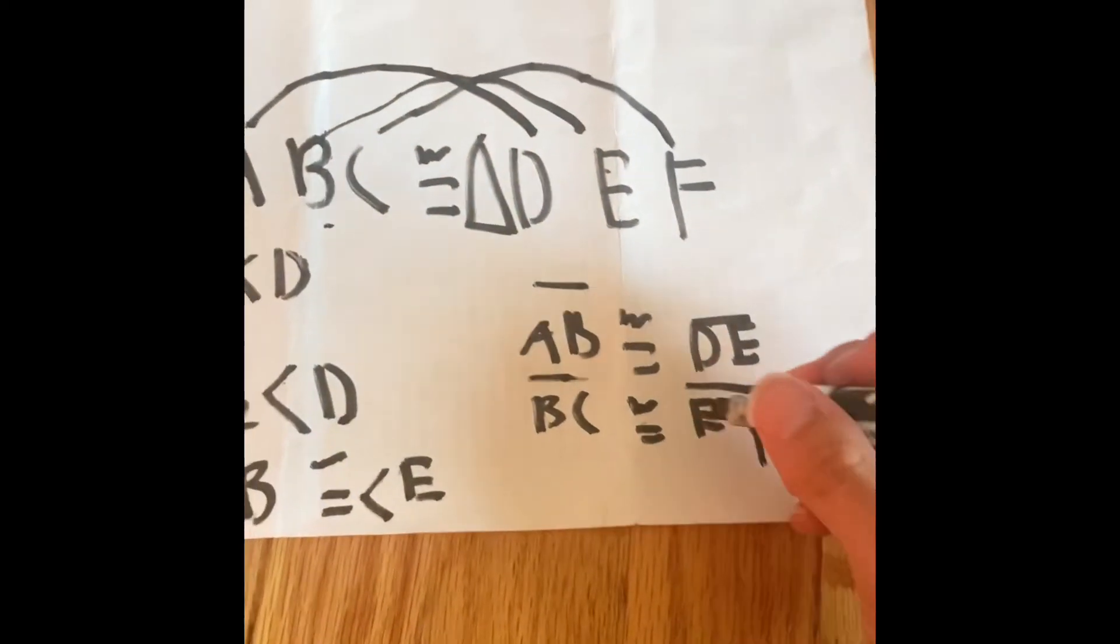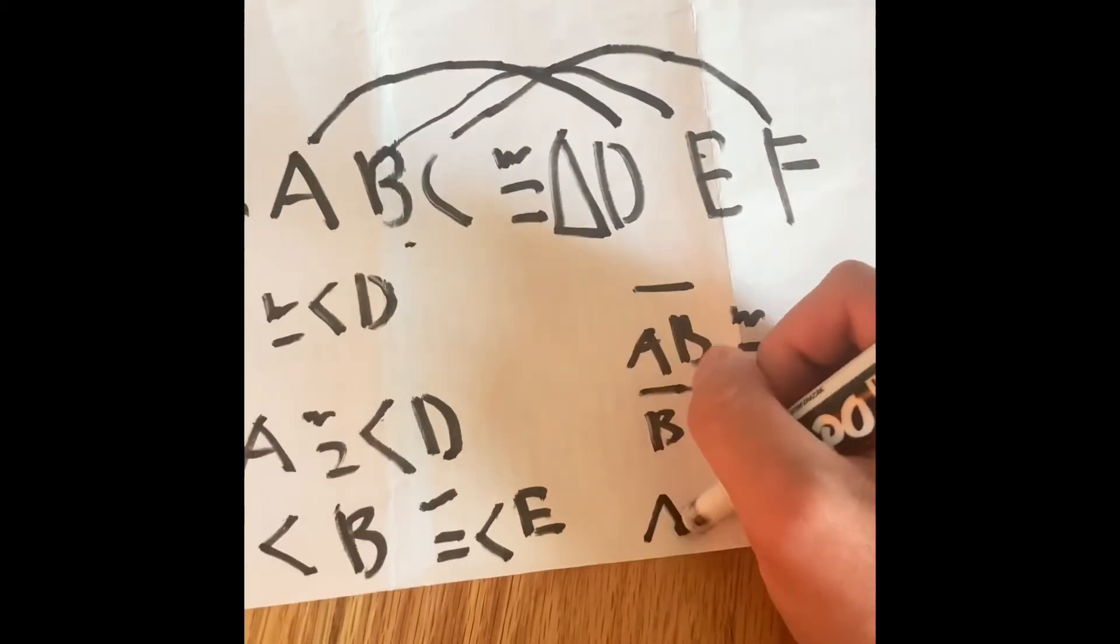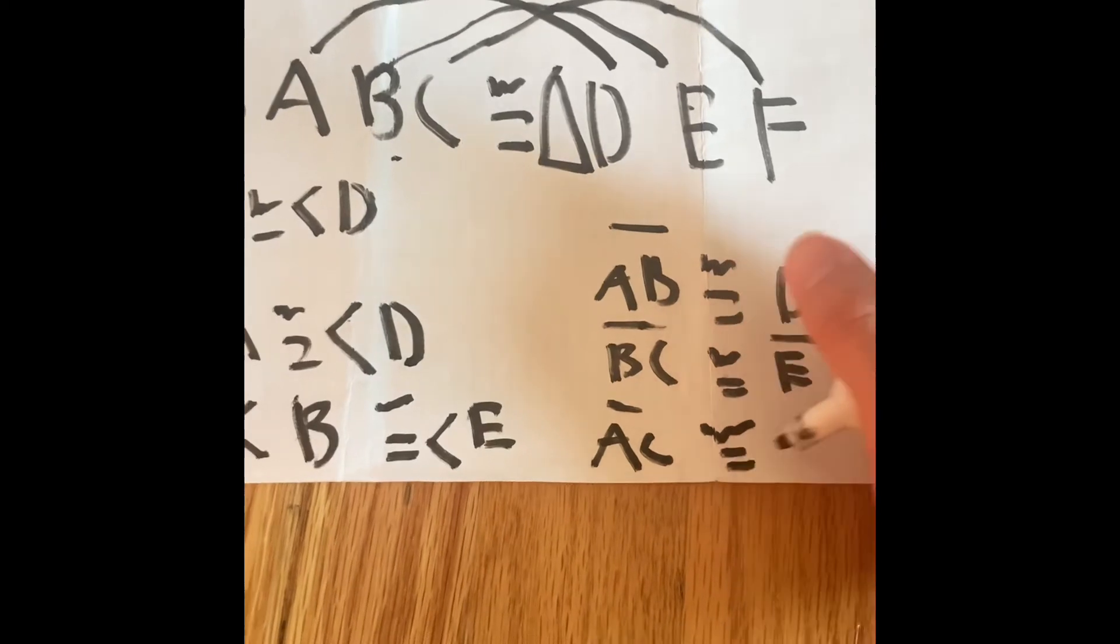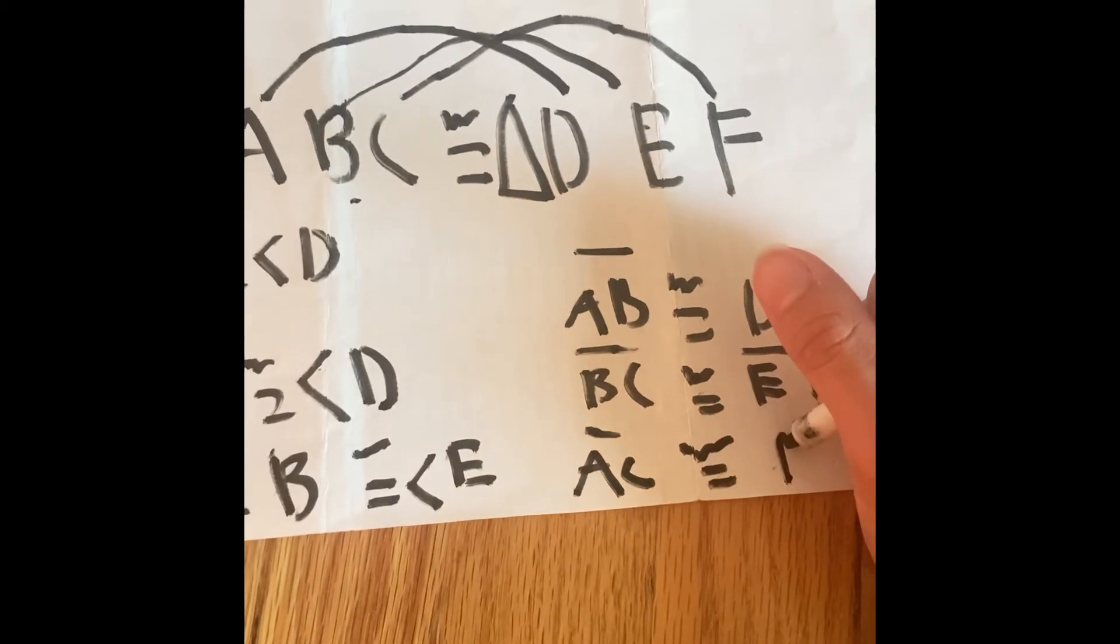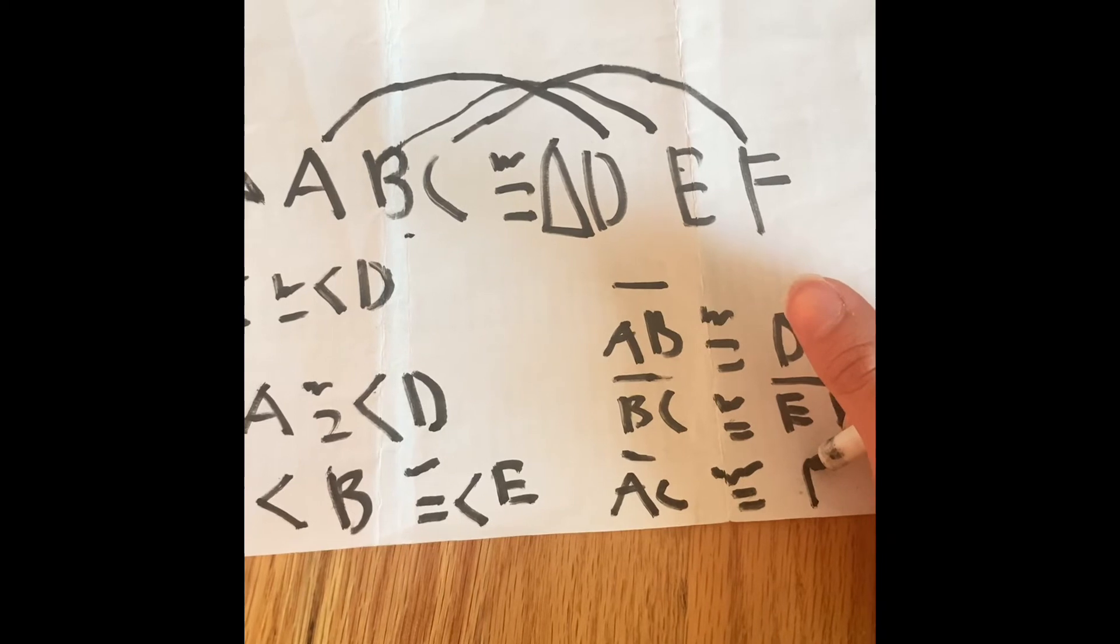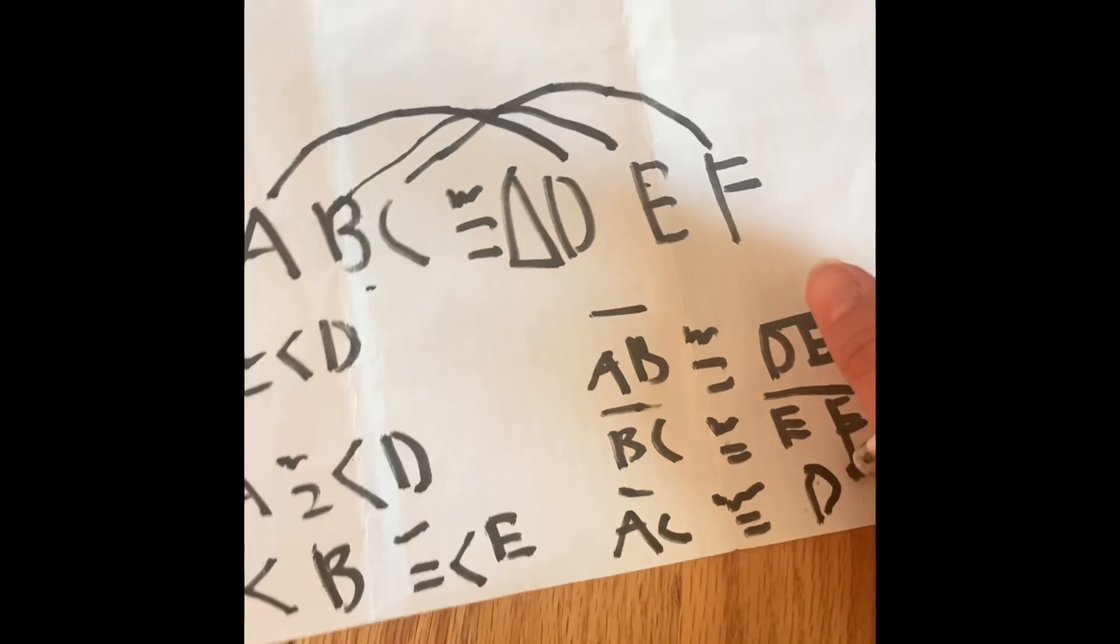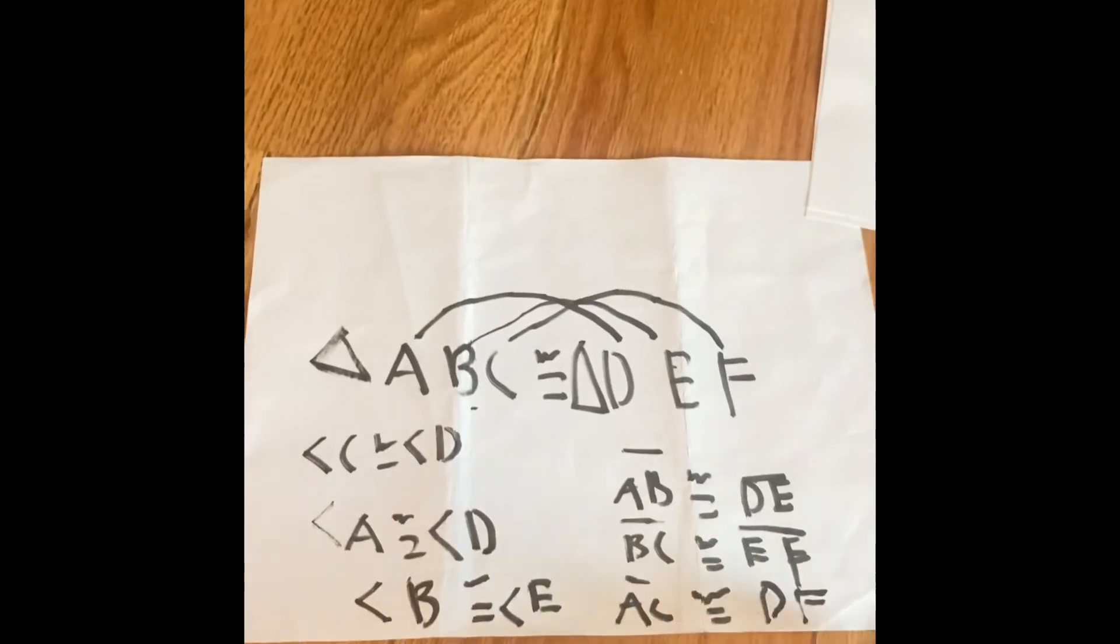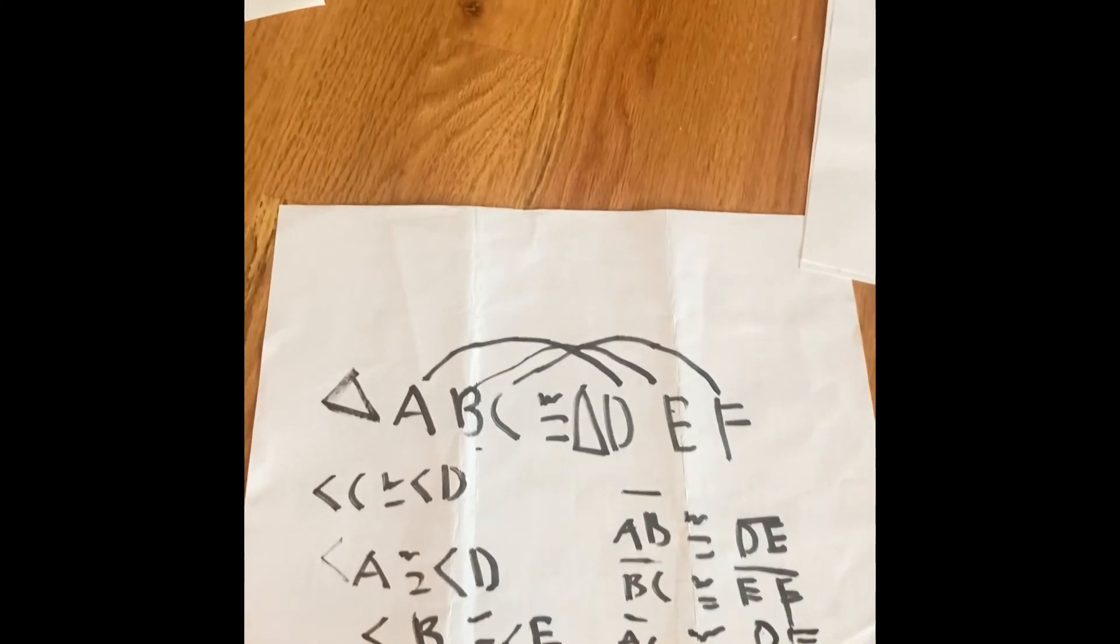And we're going to put one more. Let's say AC is congruent to DF.